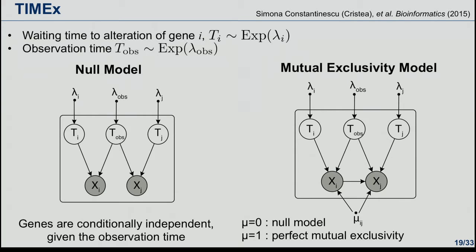A paper by Simona represents a very natural approach to mutual exclusivity, incorporating a timing aspect that many people ask for nowadays. In this model, every gene gets mutated at a specific time during tumor evolution. There is a waiting time to alteration of gene i, which is a random variable exponentially distributed with rate lambda_i. We don't know at which time point during tumor evolution the diagnosis happens, so the observation time is also a random variable. In the null model, genes are conditionally independent given the observation time and waiting times.